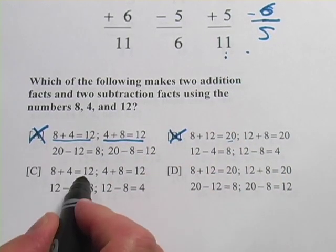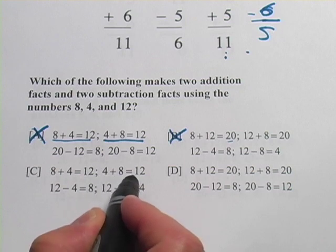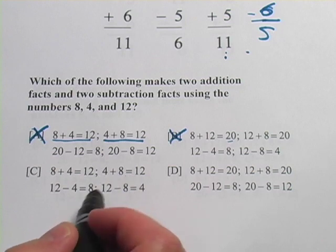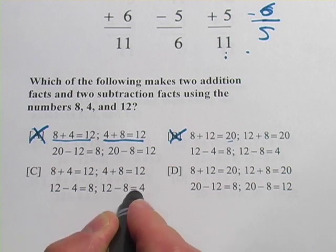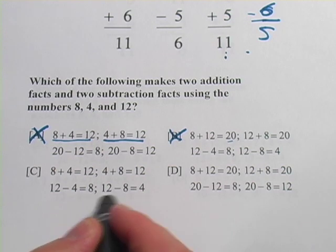Let's look at C. 8 plus 4 equals 12. 4 plus 8 equals 12. Okay. Those are the two addition facts. And then we've got 12 minus 4 equals 8, and 12 minus 8 equals 4. All of those use just 4, 8, and 12. They're all correct. That looks like the fact family.